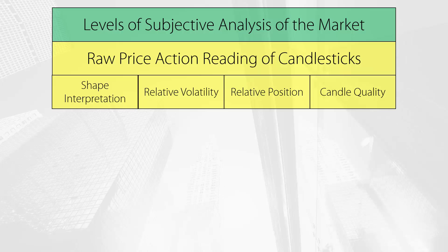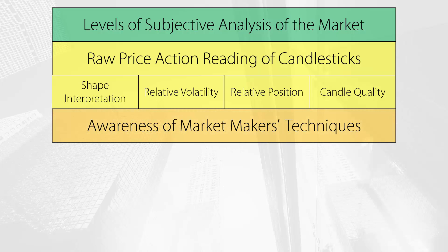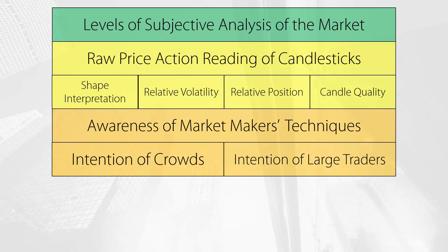The second level of subjective analysis of the market is understanding the techniques employed by the market makers in the various ways and scenarios that they might appear. This can be viewed as a type of candlestick reading that considers the intention of the crowd of retail traders against the intention of large traders in the market. Without knowing what these two types of players want and their power within the market, a trader cannot even begin to do such analysis. Part of this type of analysis also consists in trying to roll back the chain of causality that exists within each candle and that we cannot really access — that's where the subjectivity comes from in the first place.